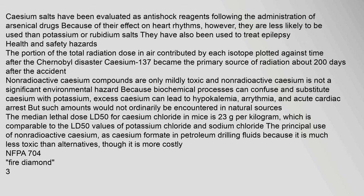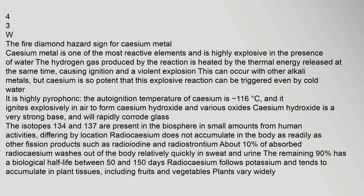After the Chernobyl disaster, caesium-137 became the primary source of radiation about 200 days after the accident. Non-radioactive caesium compounds are only mildly toxic. Because biochemical processes can confuse and substitute caesium with potassium, excess caesium can lead to hypokalemia, arrhythmia, and acute cardiac arrest, though such amounts would not ordinarily be encountered in natural sources. The median lethal dose (LD50) for caesium chloride in mice is 2.3 g/kg. Caesium metal is one of the most reactive elements and is highly explosive in the presence of water; the auto-ignition temperature of caesium is −116°C.